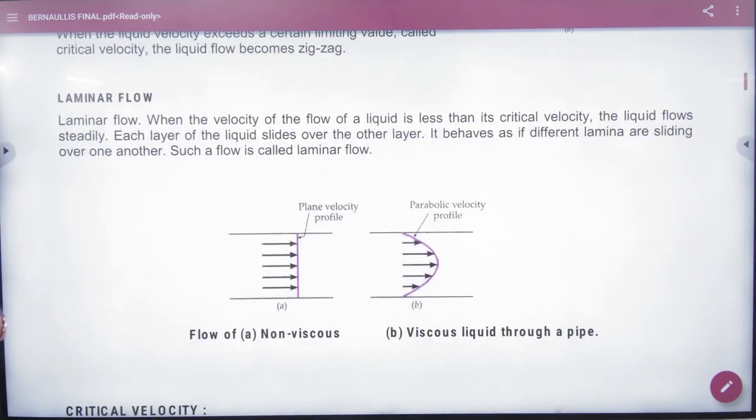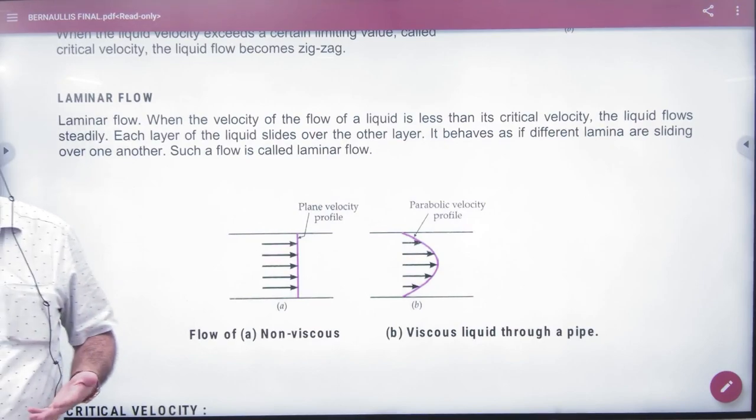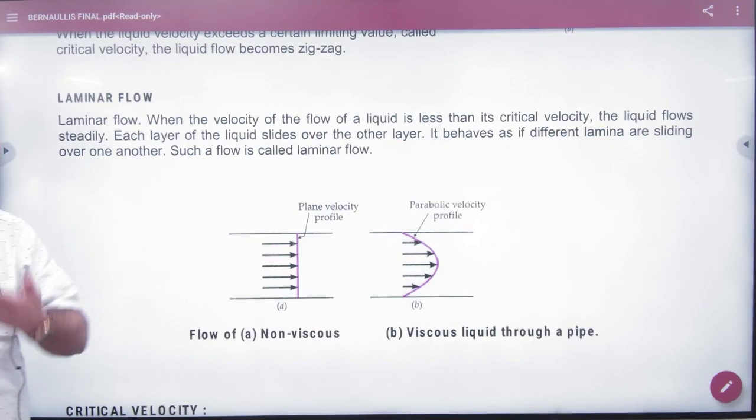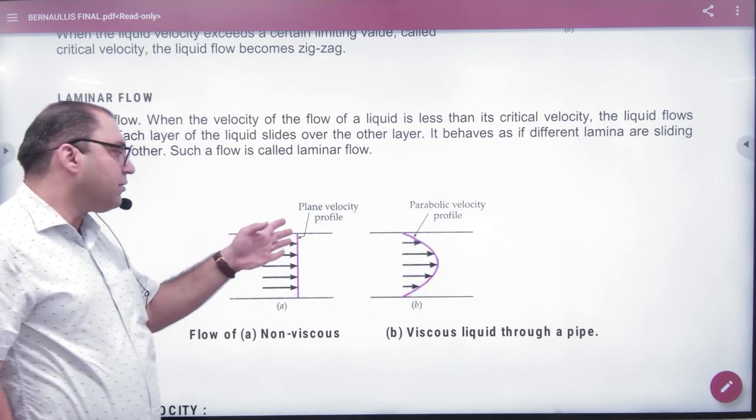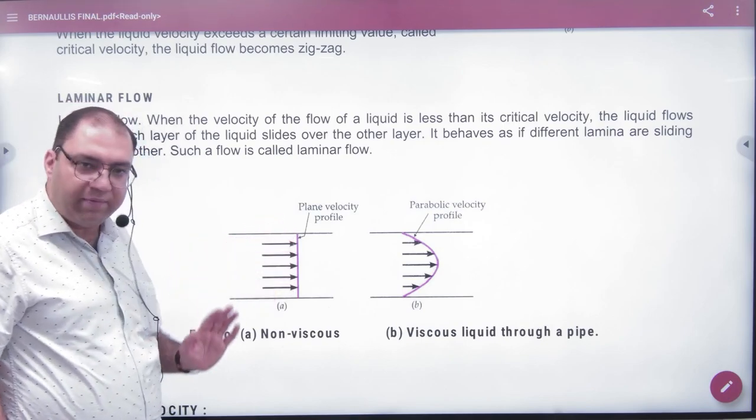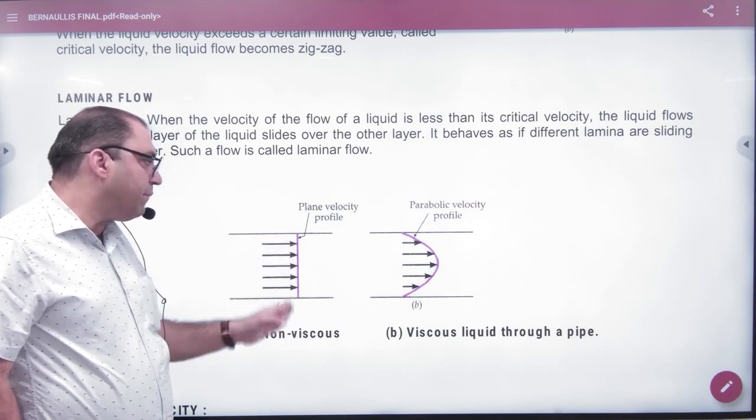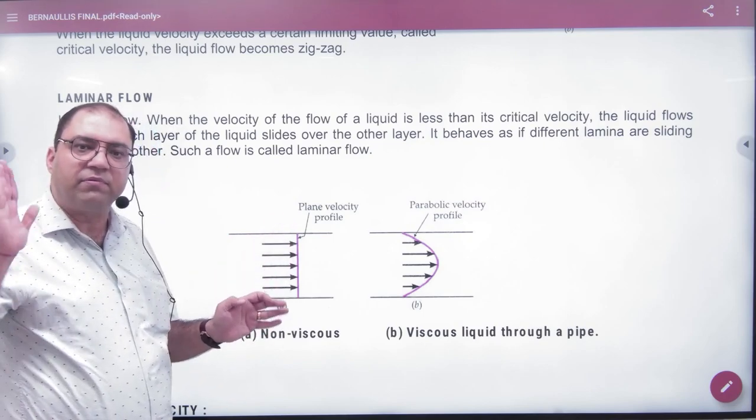One flow is laminar flow. We use laminar flow when the liquid layers are moving such that if all the liquid particles' velocities are the same, then it will be a plane velocity profile. Plane means all the velocities are the same.